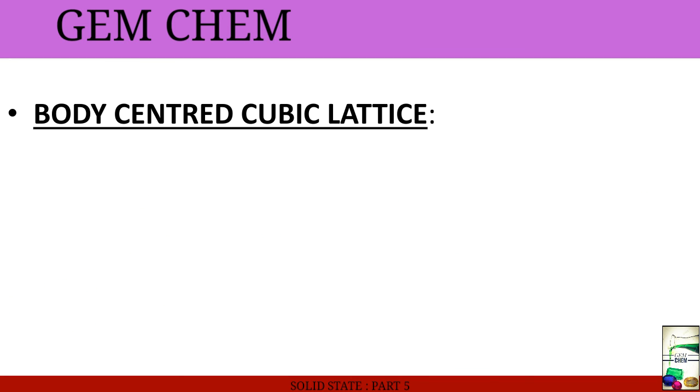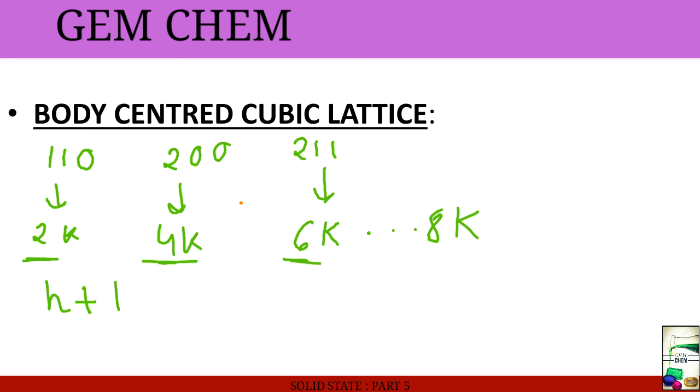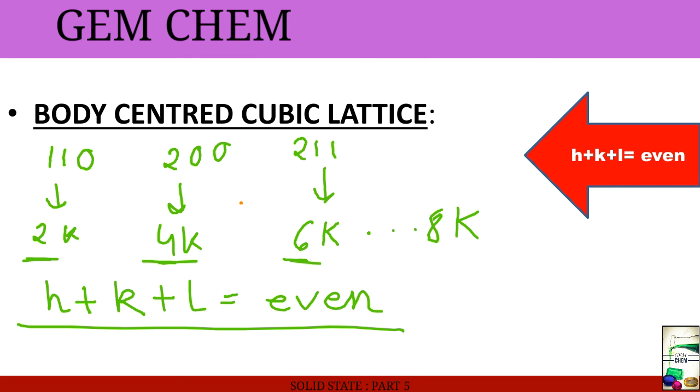Now we will go for body-centered cubic lattice. In this case, body-centered lattice, only half of the atoms lies in these planes and the remainder lies in the 200 plane. Here, first plane for body-centered one is 110, then 200, 211. We get the value as 2k, 4k, 6k and this goes on to 8k. Basically, these values come to be as even. The addition of h plus k plus l should come as even for getting the diffraction pattern of body-centered cubic lattice. This is the sufficient and tricky condition for seeing that this pattern is of body-centered cubic lattice.